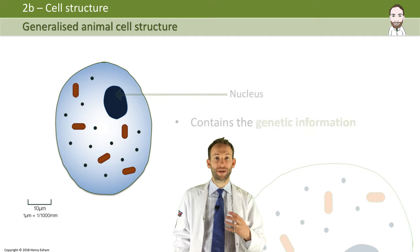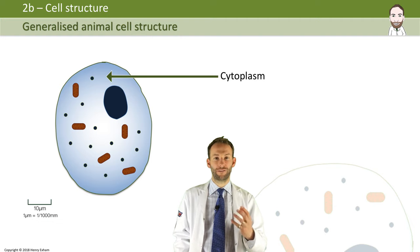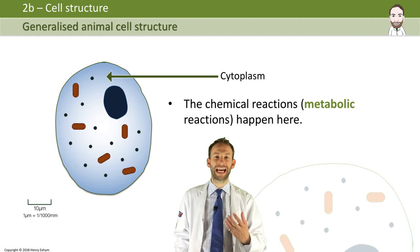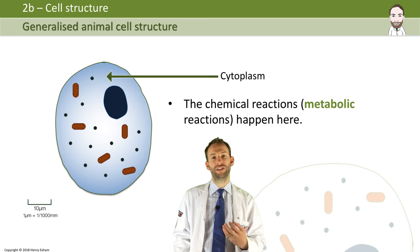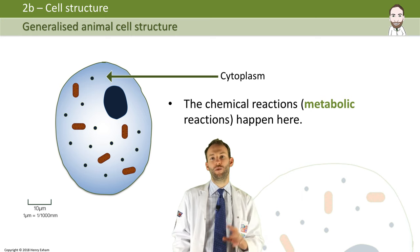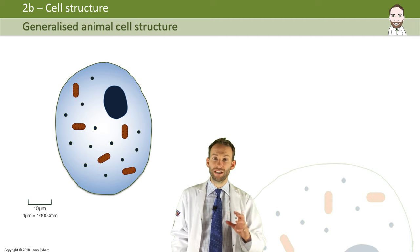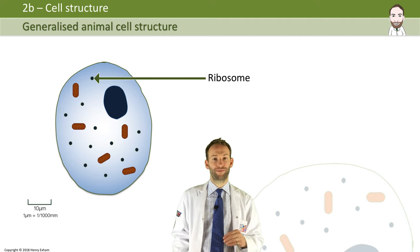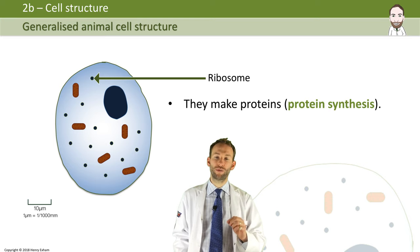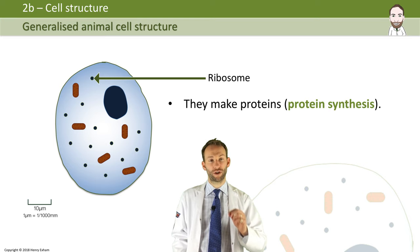The cytoplasm is this jelly-like fluid that fills the main part of the cell. Lots of chemical reactions happen there, and things are dissolved in the cytoplasm, and the organelles are obviously within the cytoplasm. One of those organelles is a ribosome. Ribosomes are tiny little particles, and they have one job to do, which is protein synthesis — building proteins.